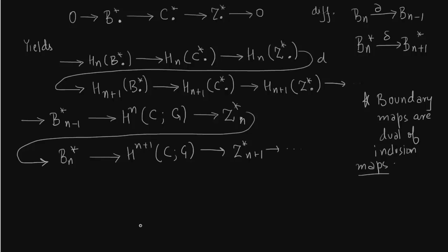This boundary map D is nothing but dual to the inclusion map, because the inclusion map goes from BN to ZN. BN is the boundary within the cycles — image in the kernel — which obviously follows from the definition of homology groups. Now, why are we going from HN to HN plus 1? Let us write down the corresponding cohomology groups. This is precisely the same construction of map as we did in homology.